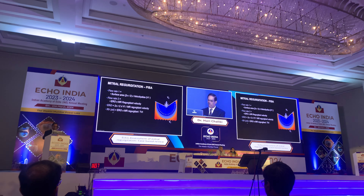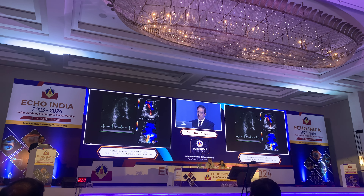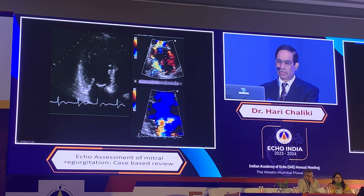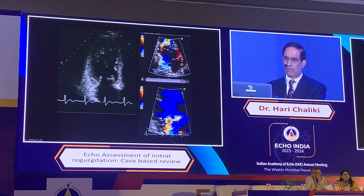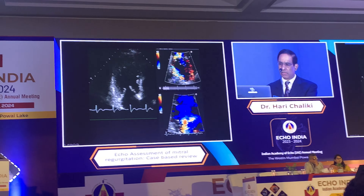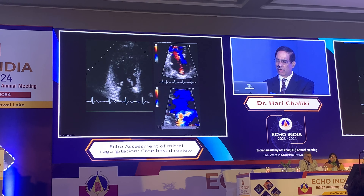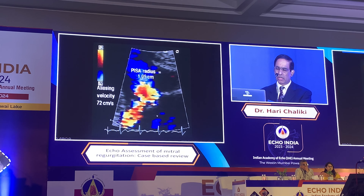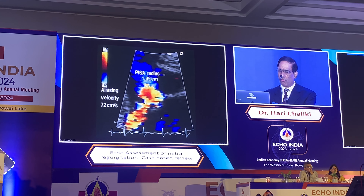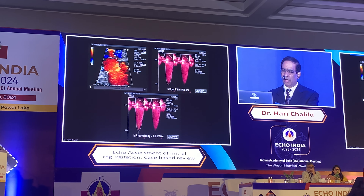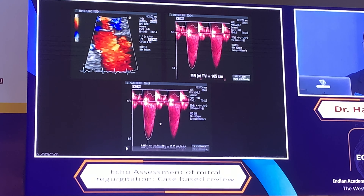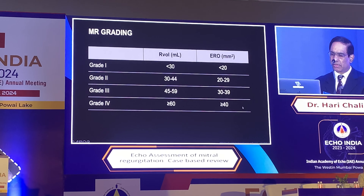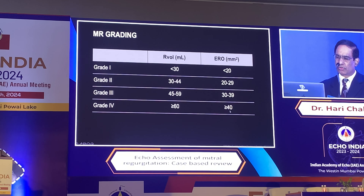If you have the peak regurgitation velocity and rearrange the equation you can get the ERO, and you can get the regurgitation volume by multiplying by the VTI. In a real case with severe prolapse, possibly a ruptured chord, you can see the color flow jet in the left atrium. Once you shift the baseline you see the nice blue convergence zone. In this case the aliasing velocity is 72, radius is 1.05 cm; you calculate the surface area, then with the VTI of the regurgitation jet compute the regurgitation volume.